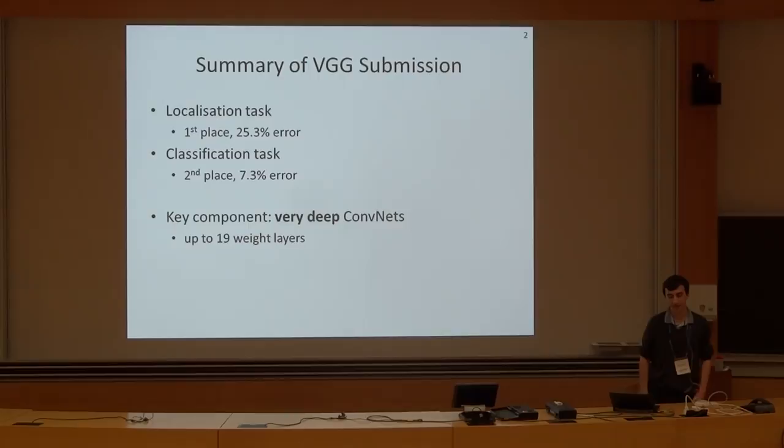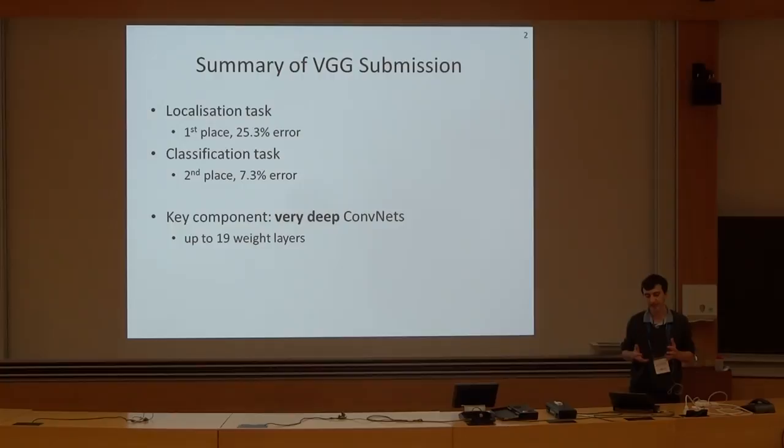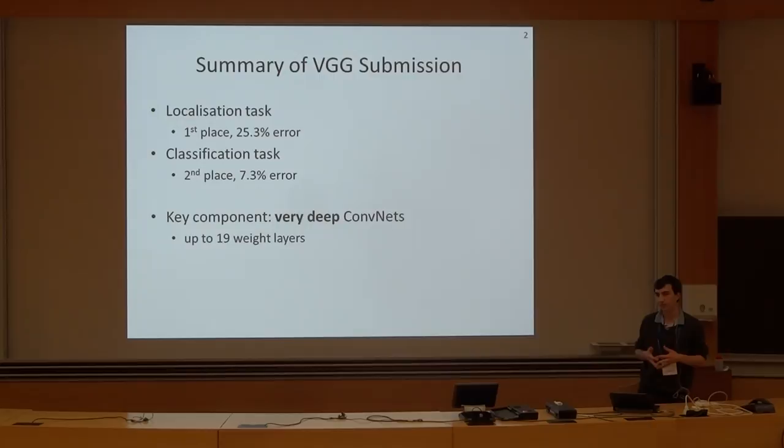We won the localization challenge and came second in the classification task. The key component behind our submission was the use of very deep convolutional networks. By very deep, I mean up to 19 weight layers, which is substantially deeper than previously used in the literature. I'll start with talking about our classification system, and then describe how we perform localization.